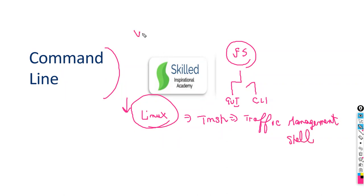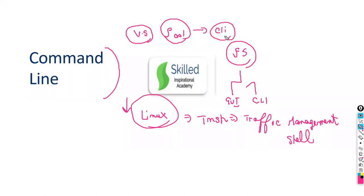Whatever things you configure through CLI, you can configure vice versa through GUI — like virtual server, pool, or any pool member. What operating system does it have? TMOS, and it uses your Linux operating system. So if you're good in Linux, it's easy to learn CLI of F5.